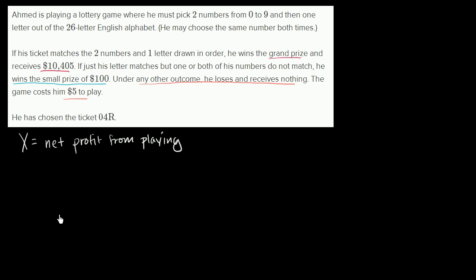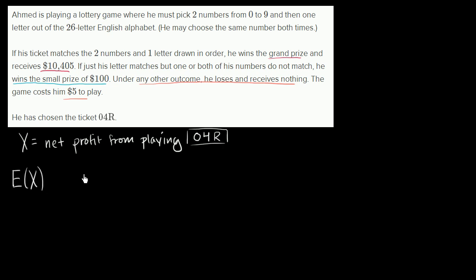What is the expected net profit from playing ticket 0,4R? So X is the random variable representing the net profit from playing this ticket. What is the expected value of X? I encourage you to pause the video and think through it on your own.